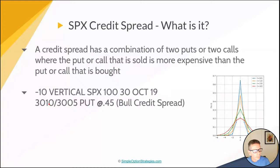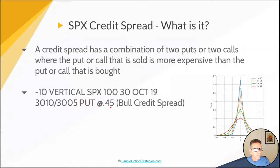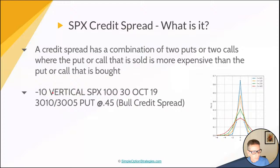You receive a credit — in this case, 45 cents. You multiply that by 100, and with 10 contracts, 45 cents times 100 times 10 gives you $450 that you receive as a credit for this trade. The goal is to keep that credit. Once you put the trade on, you want to keep all or most of that credit in order to receive that income and move on to the next trade.